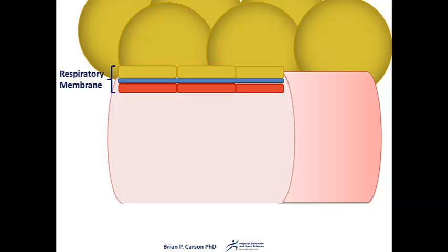The respiratory membrane is made up of a single epithelial cell layer as part of the alveolar wall. As with all epithelial cells, this is accompanied by a basement membrane.